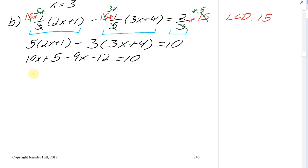Now you can just solve this as usual. I can collect my like terms. So 10 minus 9x is x, and 5 minus 12 is negative 7. And then all that equals 10. Then I can add the 7 to each side, and I get that x equals 17. So that will be my solution here.